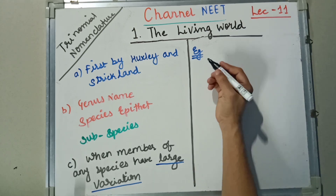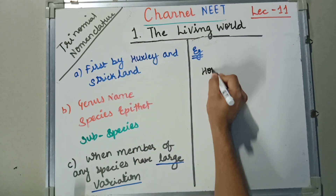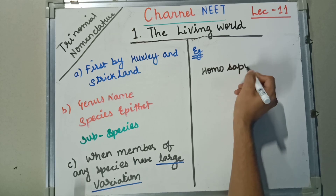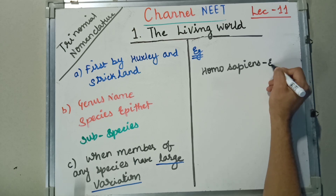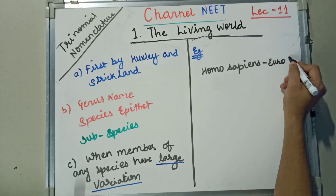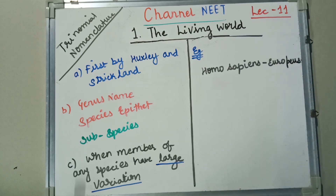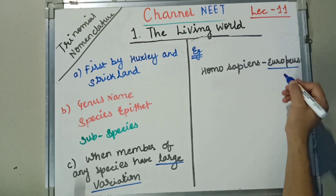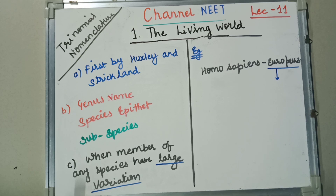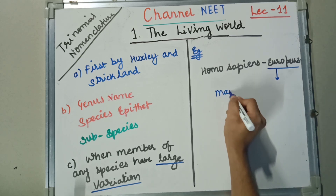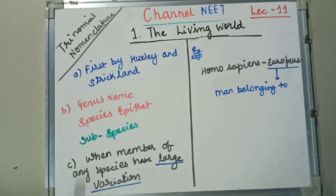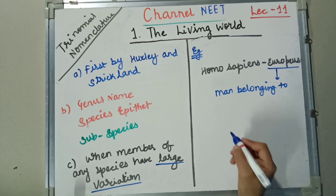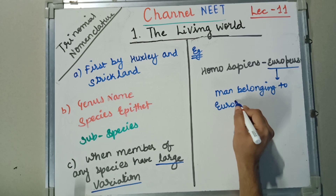The next example in Trinomial Nomenclature is Homo sapiens europaeus. This name represents man belonging to Europe, or the European race.